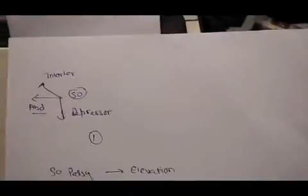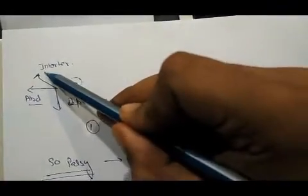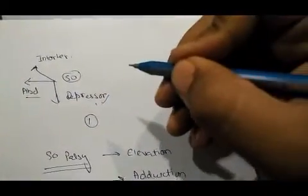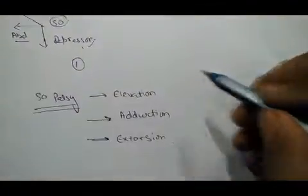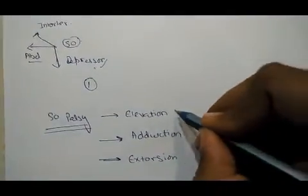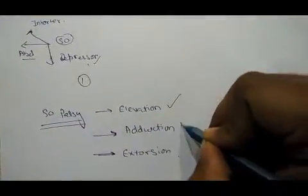We start with superior oblique palsy. The basic principle is that superior oblique is a depressor, intortor, and abductor. The primary action is intortion and the secondary one is depression. Whenever there is a superior oblique palsy, we get the opposite actions: elevation, adduction, and extortion.